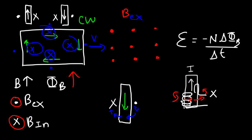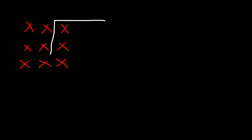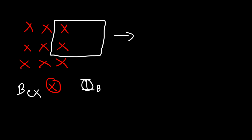Let's look at another example where the flux is decreasing. Let's say the magnetic field is going into the page and it's constant, and we have a coil of wire that is moving away from the magnetic field. The external magnetic field is into the page, and the flux going through the coil is decreasing as you move away. Since the flux is decreasing, the system doesn't like that and is going to try to bring it back to equilibrium by increasing the flux — so the induced magnetic field will be in the same direction as the external field.